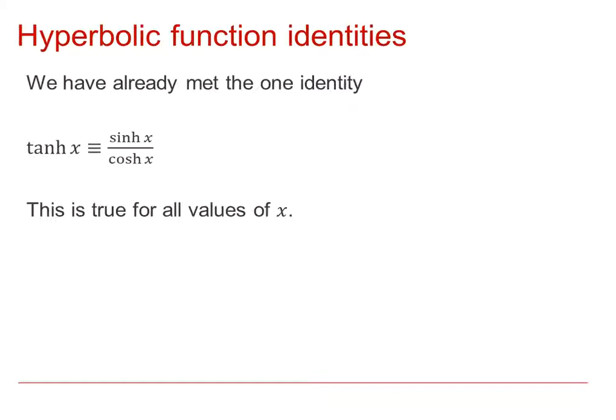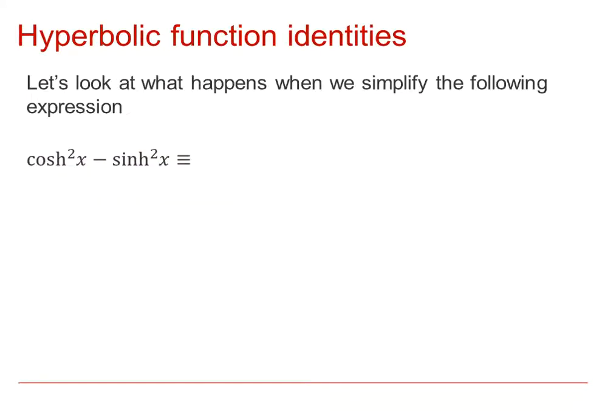We've previously seen that tanh x can be defined as sinh x over cosh x, so that's the first of your identities to be learned, and it's true for all values of x. But now we're going to look at what happens if we look at some different potential identities and see how they behave.